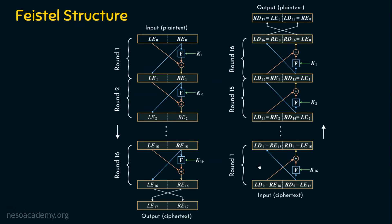The reverse process is decryption. The input for decryption is the ciphertext. Note that decryption round 1 uses k16 as the key, whereas encryption round 1 uses k1 — decryption is quite reverse. Whatever key was used in encryption round 16 is used for decryption round 1. For decryption round 15, we use k2, and k1 is the round key for decryption round 16.